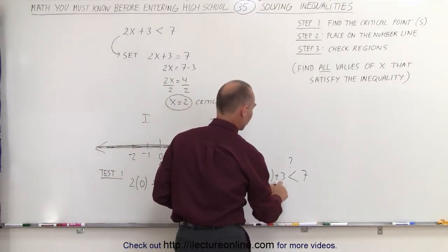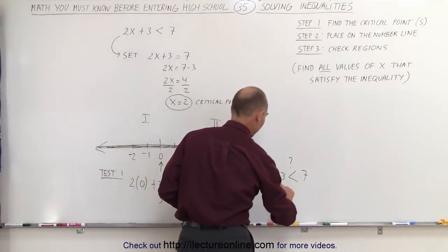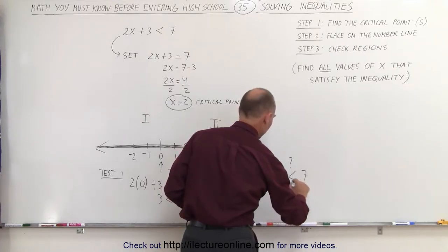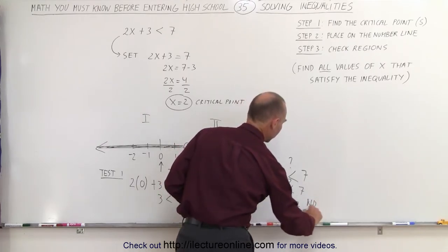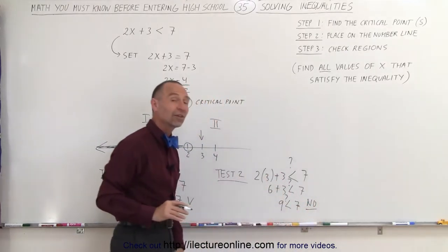2 times 3 is 6. 6 plus 3 is 9. So is 9 less than 7? And the answer is no. 9 is larger than 7. It's not less than 7.